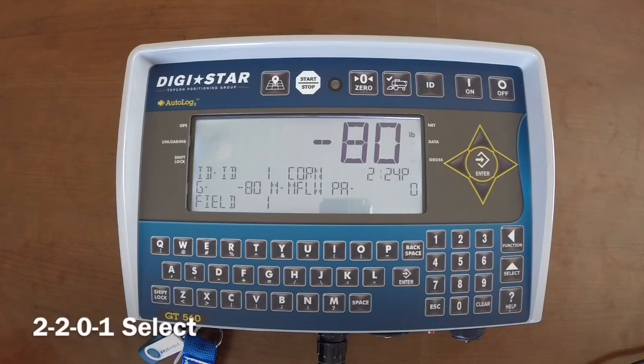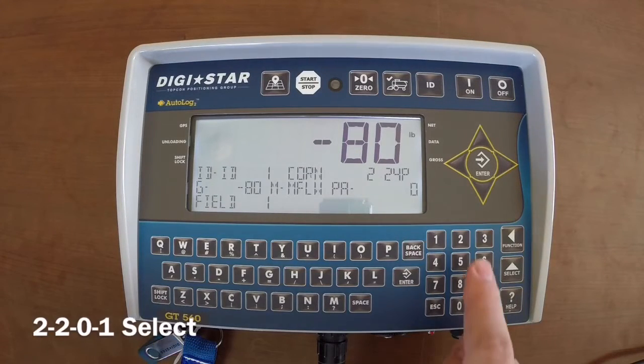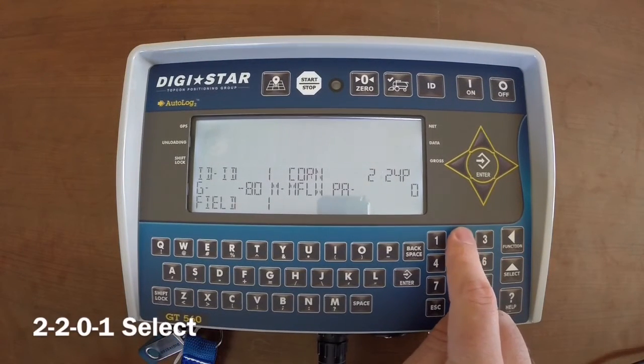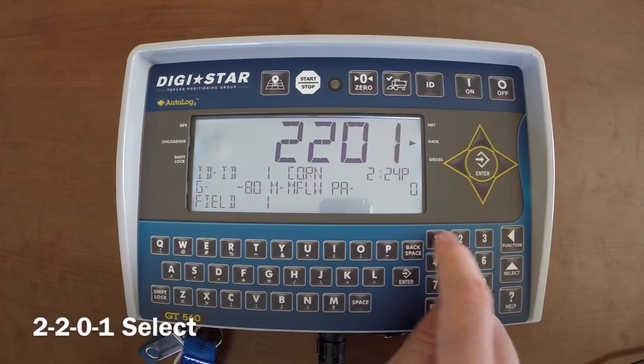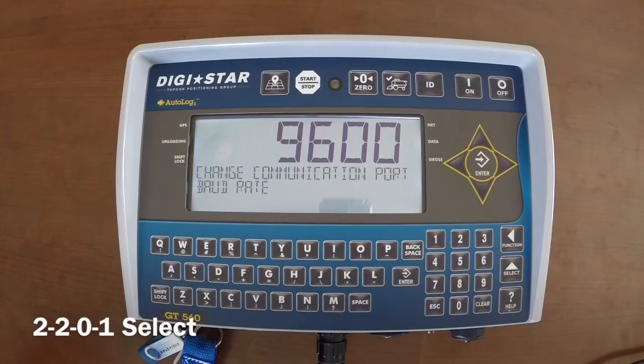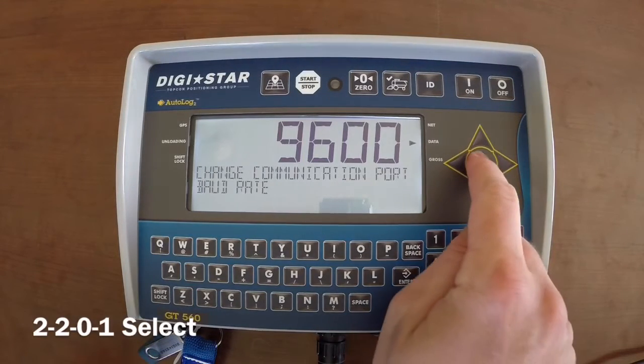Type in 2201 and then the select button. Ensure 9600 is displayed and type in the enter button.